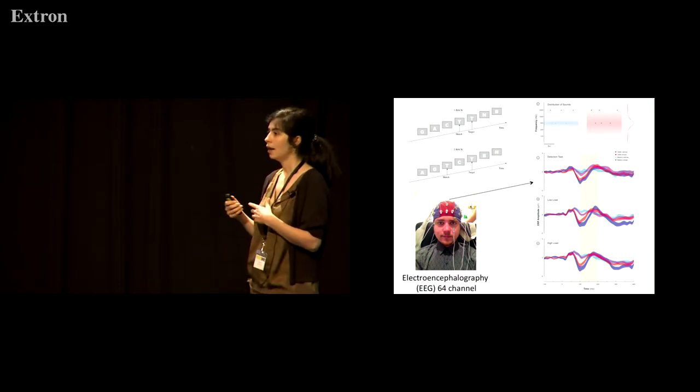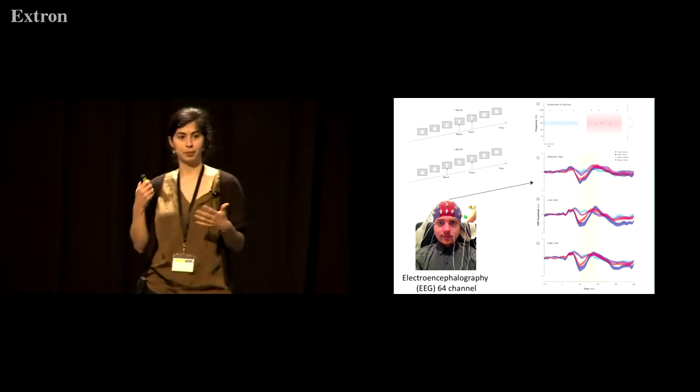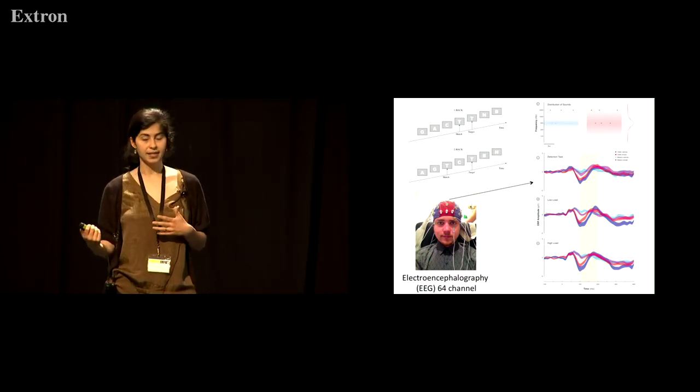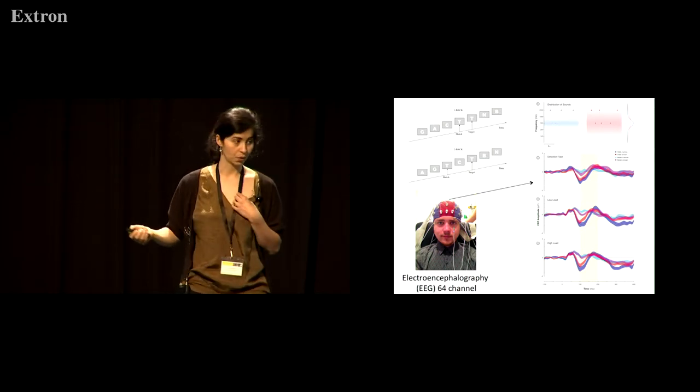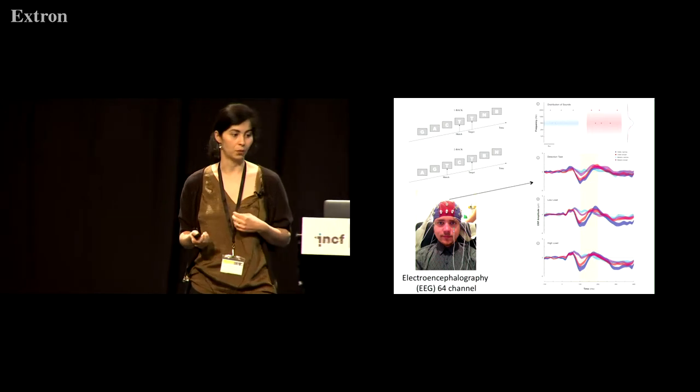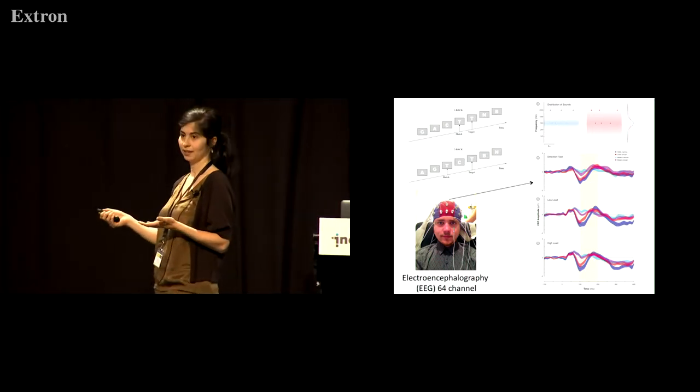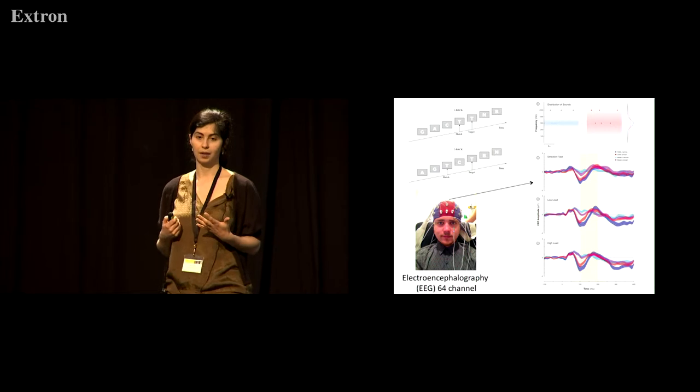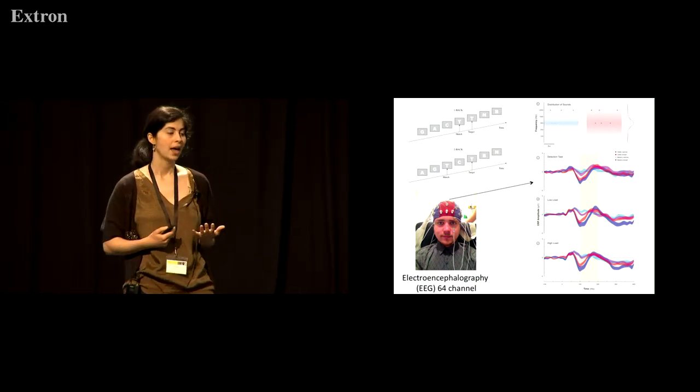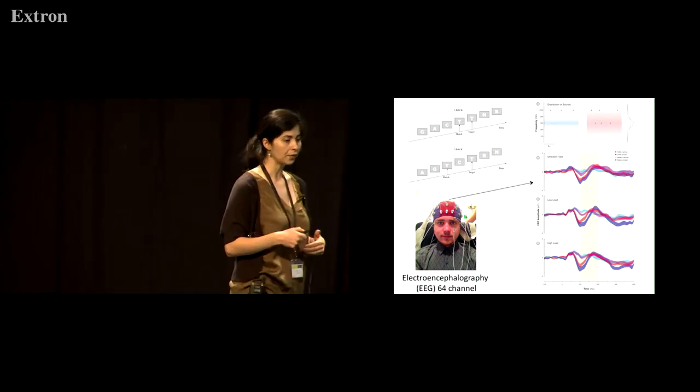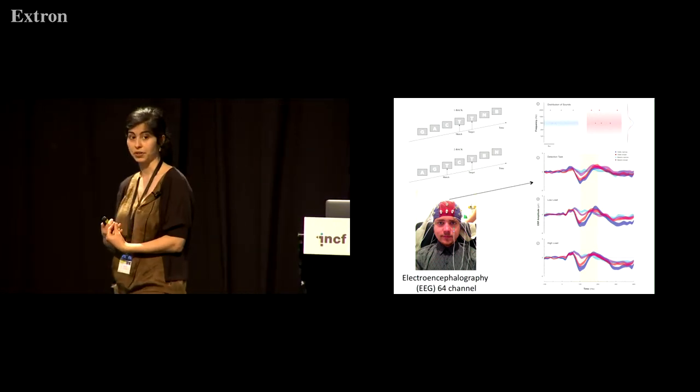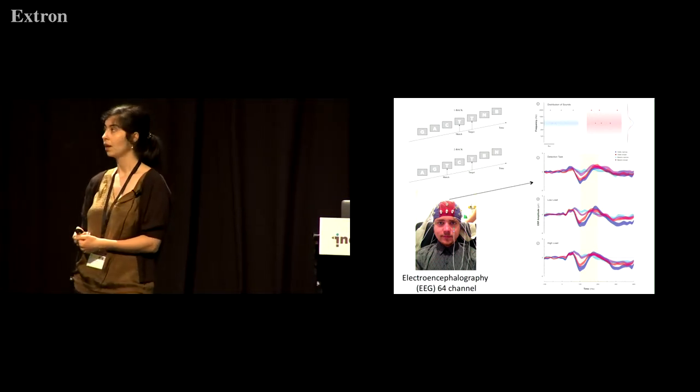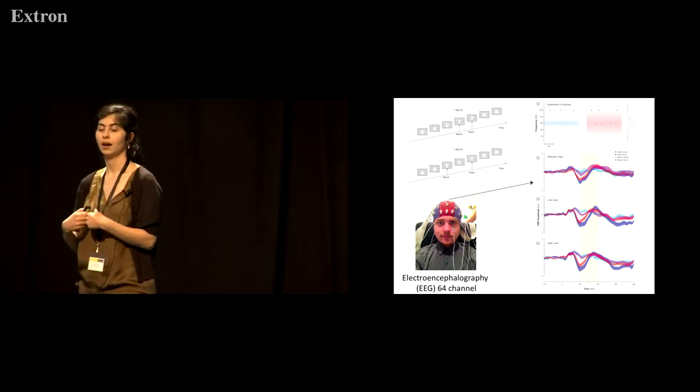Now what happens when we have people engaging in a demanding task? That's over here. This is for the low load task or the n1 task, and again we don't see much difference. People are still able to detect outliers and there is a higher prediction error in the context of a narrow distribution as you see in blue.